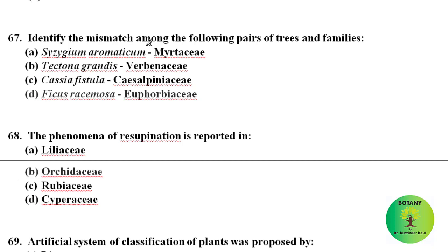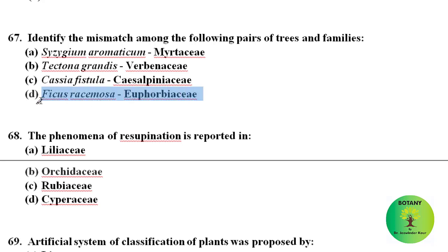Identify the mismatch among the following pairs of trees and families. Cinnamomum aromaticum belongs to family Lauraceae — correct. Tectona grandis belongs to family Verbenaceae — correct. Cassia fistula belongs to family Caesalpiniaceae — correct. Ficus racemosa: the option states a wrong family, but Ficus racemosa belongs to family Moraceae. So this is the incorrect match.